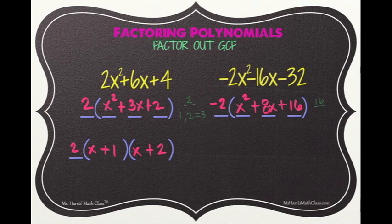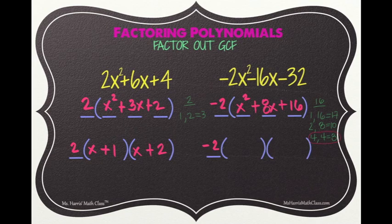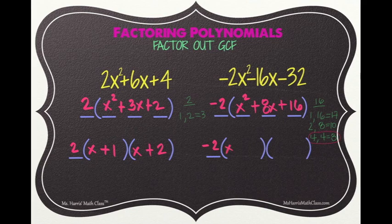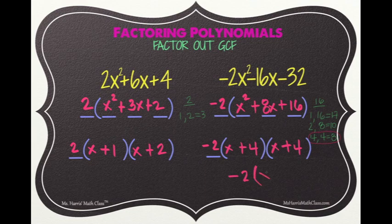The trinomial x squared plus 8x plus 16 can still be factored. We write out the factors of positive 16: 1 and 16, 2 and 8, 4 and 4. Since 4 and 4 have a sum of positive 8, those are our factors. We bring down our GCF of negative 2 and factor the trinomial. The factors of x squared are x and x, completed with positive 4 and positive 4. Our factors are negative 2, (x plus 4), and (x plus 4), which can also be written as negative 2 times (x plus 4) squared.